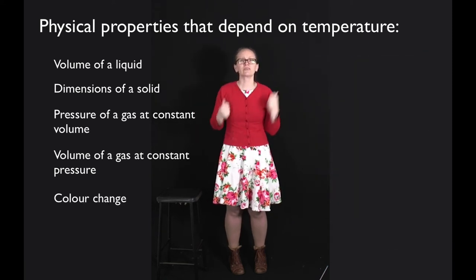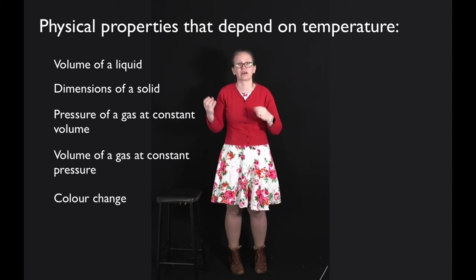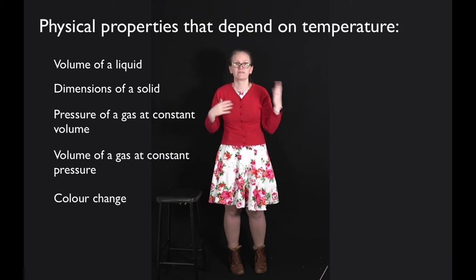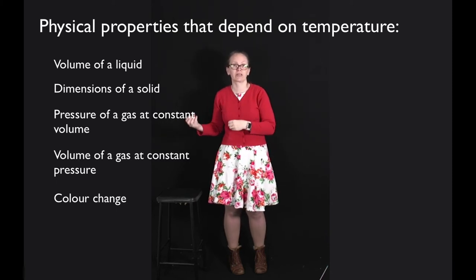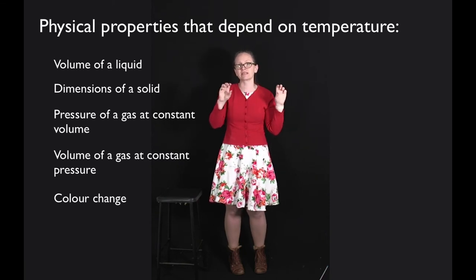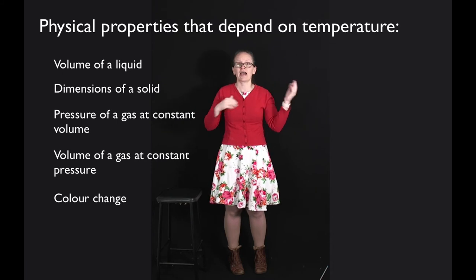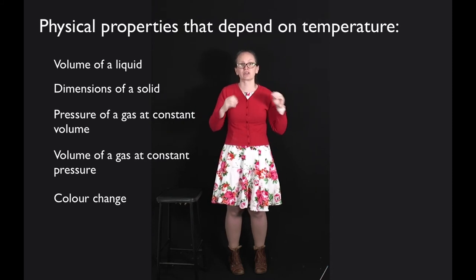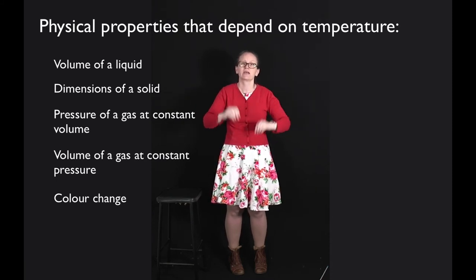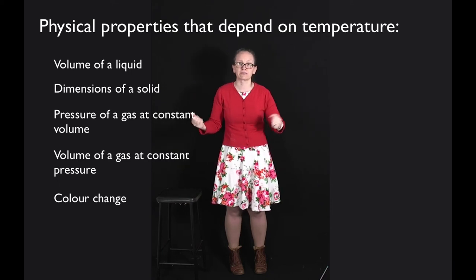We can also get a color change as we change the temperature for some special molecules. For example, you may have seen little thermometers that you can stick on the side of fish tanks — they change color as the temperature of the water changes. This is also how mood rings work.